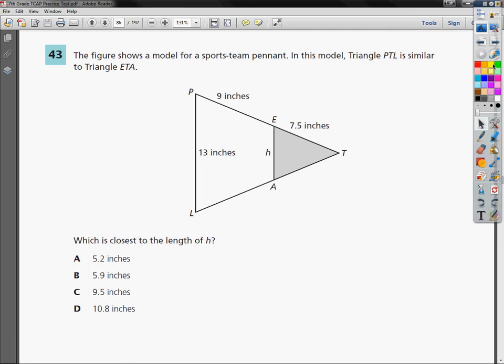So I'm going to add a little color myself here. PTL would be the big triangle. ETA would be the smaller one.